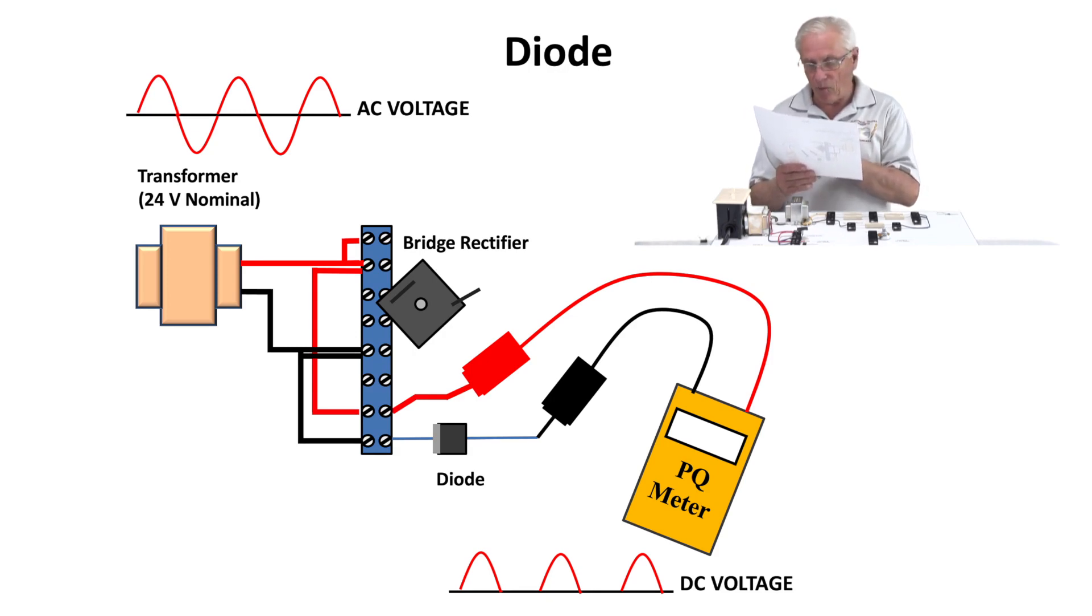You can see on the drawing where I'm going to connect a power quality meter. And later I will also connect another meter just to see what it looks like. And you'll see what happens when we put the diode in place. The real simple question is, what happens when you place a rectifier diode in an AC circuit?